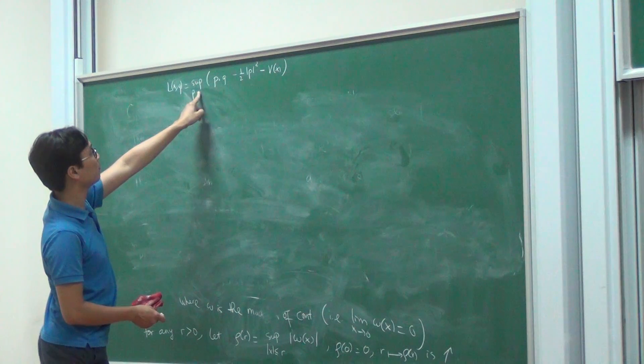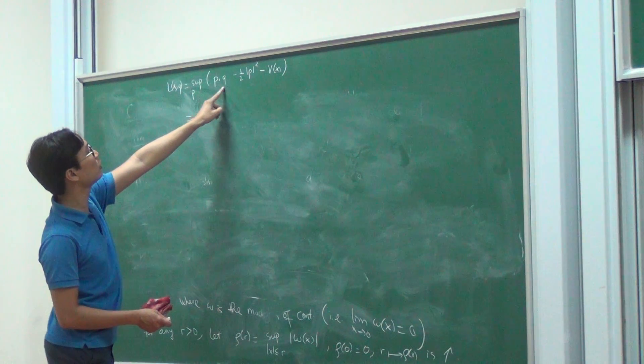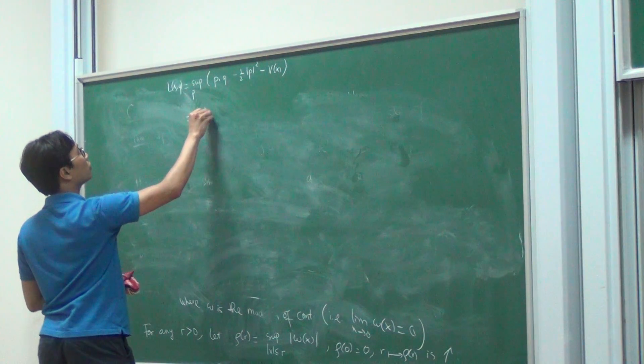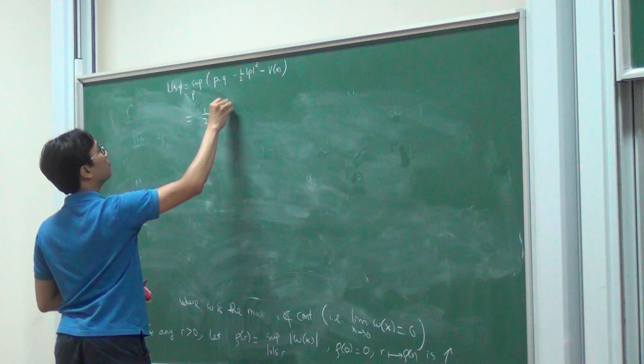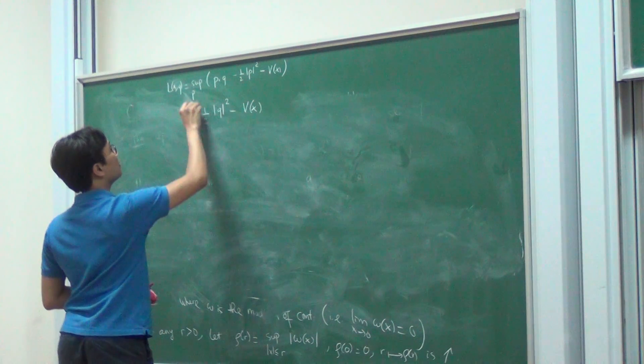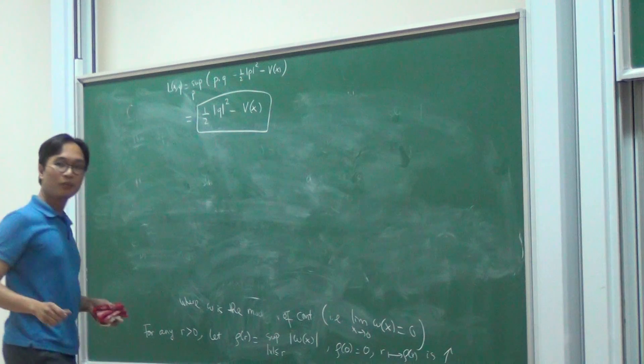I differentiate this with respect to P, and P is equal to Q. So this is going to be equal to one-half Q squared minus V of X. So this is the Lagrangian of the classical mechanics one.